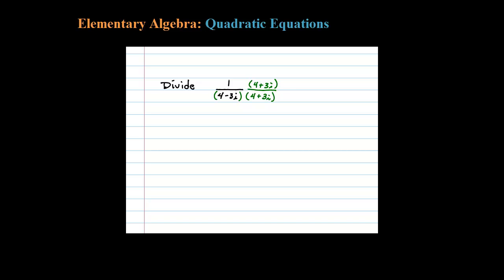Now be sure to multiply the exact same thing times the numerator so that you don't really change the problem. In this case, on the numerator, 1 times that is just 4 plus 3i.